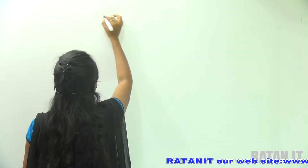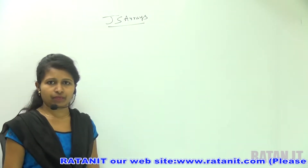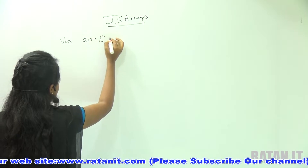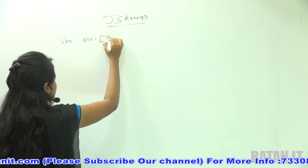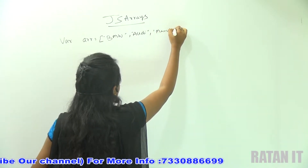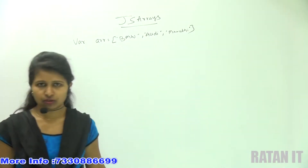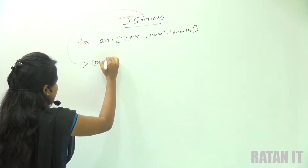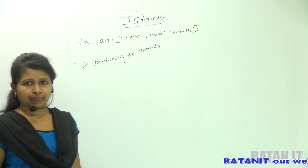JavaScript Arrays. We already know that we already defined a variable array. Let us suppose I need to combine different cars — BMW, Audi, Maruti. Basically, first we need to talk about the array definition. An array is nothing but combining the elements.